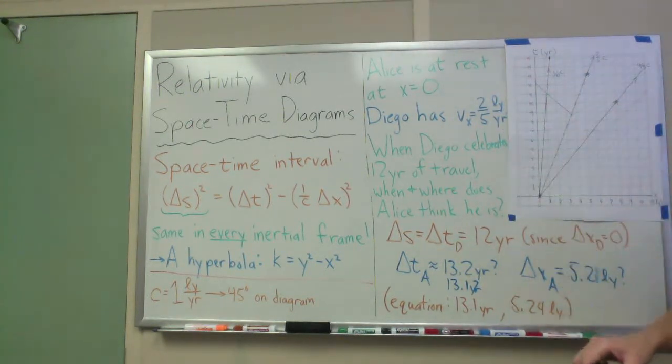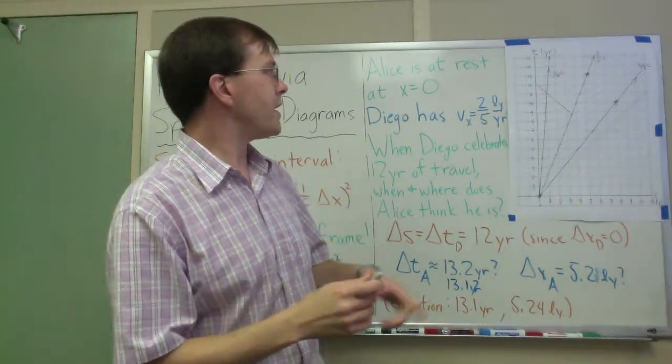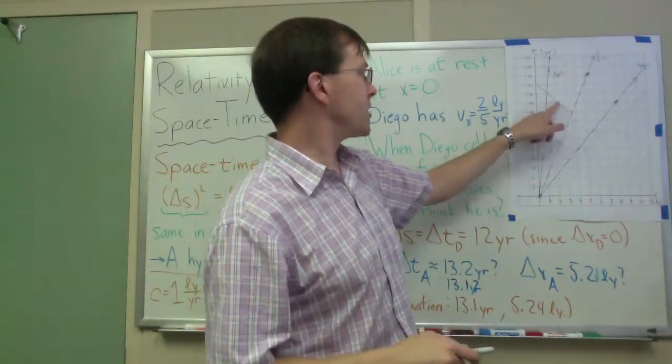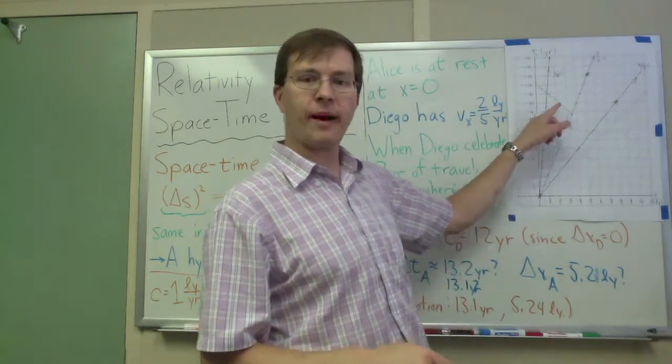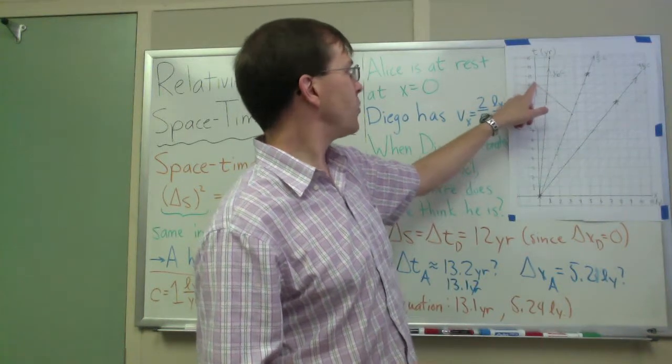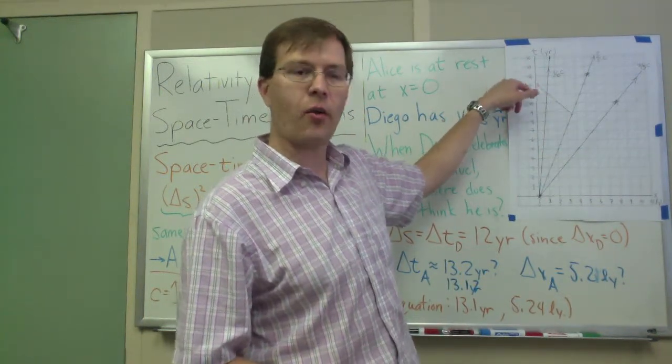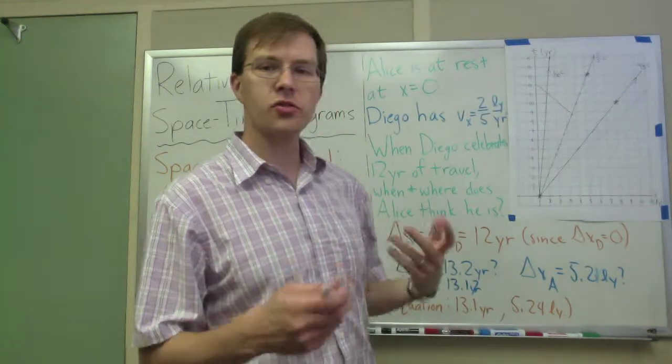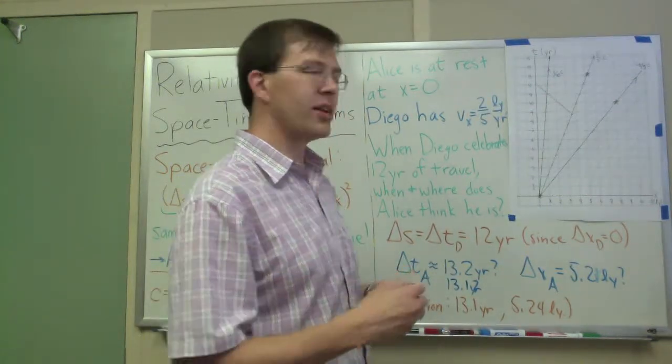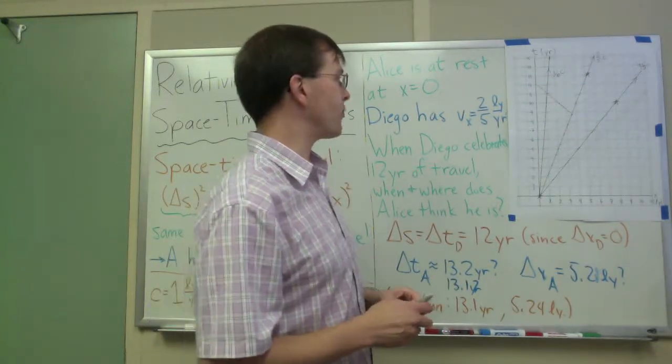We can even do additional calculations, like asking when does that message come back? It's going at 45 degrees down from vertical at a slope of minus one. A light beam message, radio or something going back, would get to Alice at about twelve and a third years or so, getting back there. The message would be received at that point. You can do a lot of calculations like that, just from a spacetime diagram like this, to see how this stuff works.